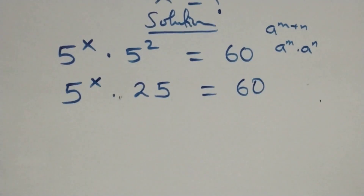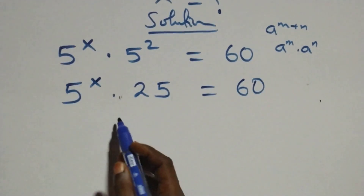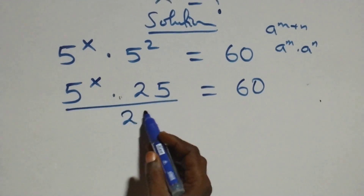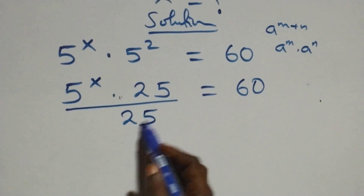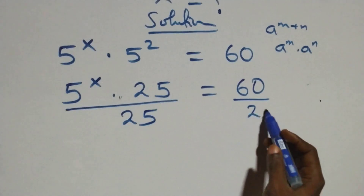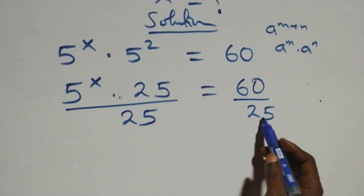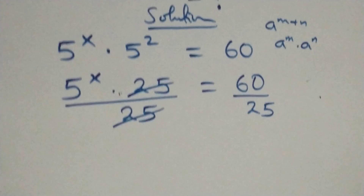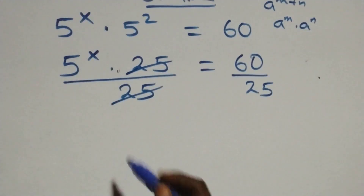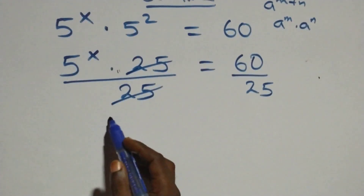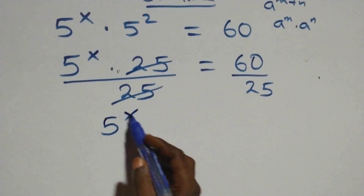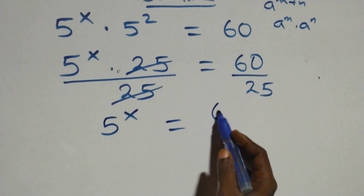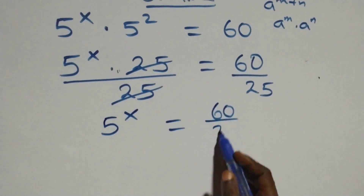We divide both sides by 25. Divide this side by 25, also divide this side by 25. This implies 25 cancelled each other, and we are left with 5 raised to power x now equals to 60 over 25.